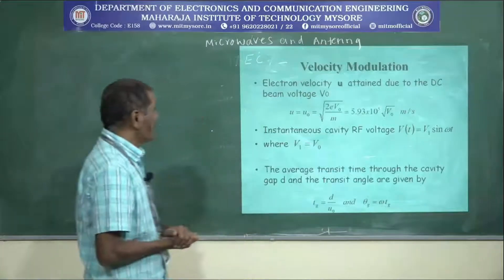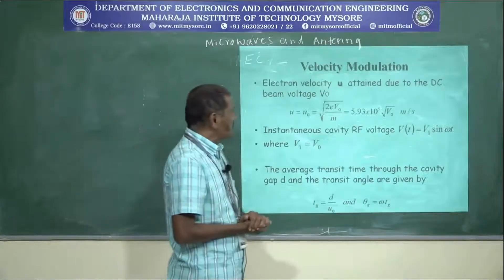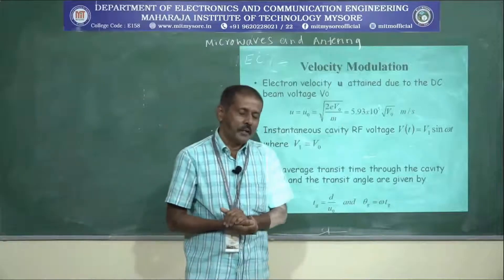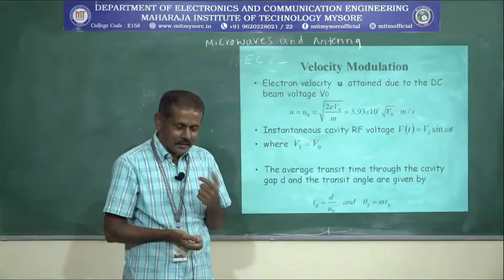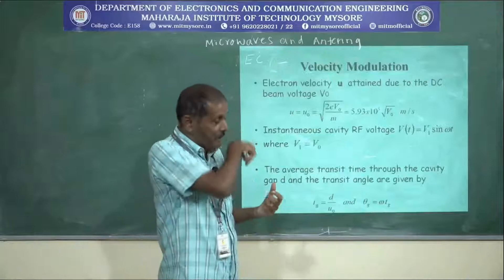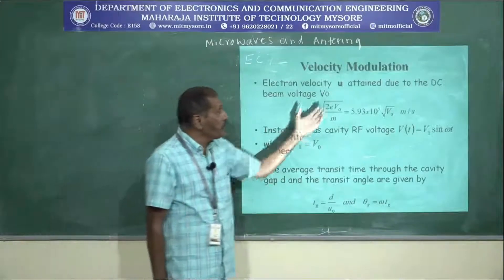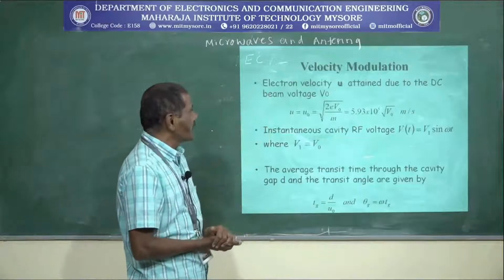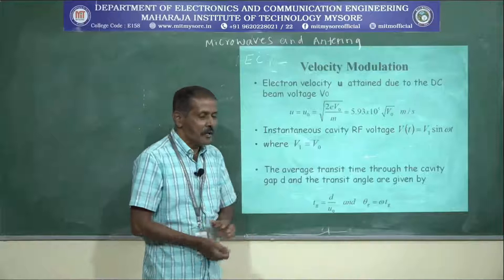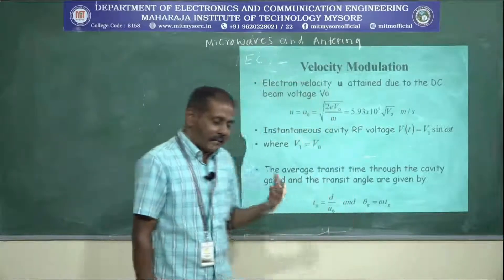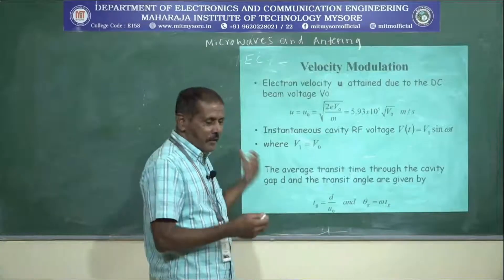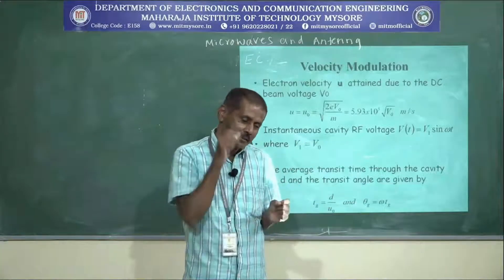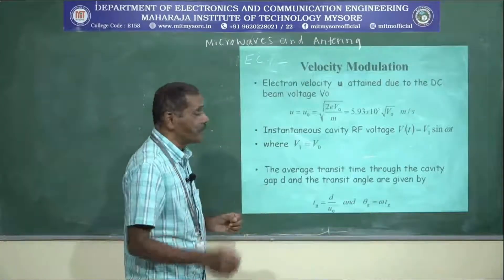This reflex klystron operates on the principle of velocity modulation. Velocity modulation is when the electrons moving from cathode to the repeller plates pass through the cavity gap, their velocity changes depending upon the potentials. So it is called velocity modulation. The electron velocity U attained due to the DC beam voltage V0 is considered in the grid space. The electrons move at normal velocity before entering the cavity grid, but when passing through the grid due to the applied grid voltage, their velocity changes.